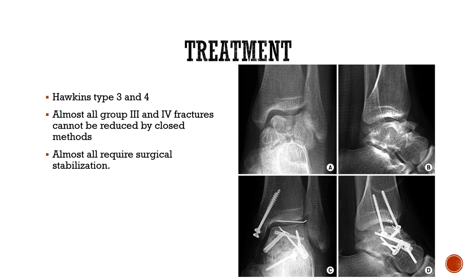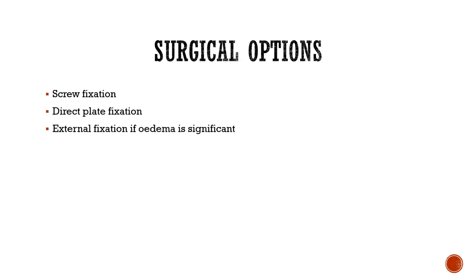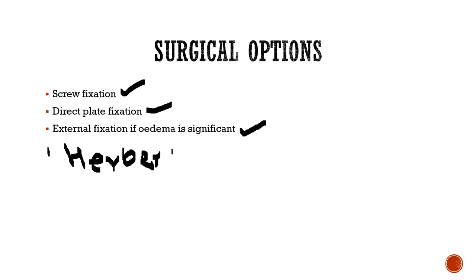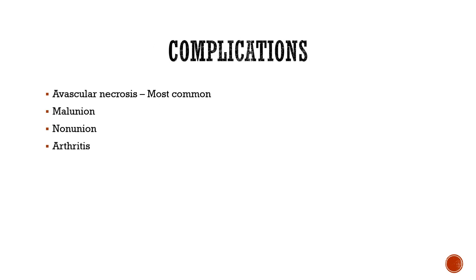For Hawkins type 3 and type 4 fractures, closed reduction is almost impossible, so open surgical fixation is required. Implant options include screws, direct lateral or medial plates, or external fixation if there is significant edema. The Herbert screw, discussed in a previous lecture, can also be used in talar neck fractures.